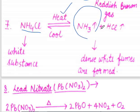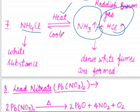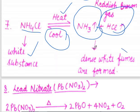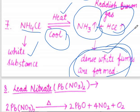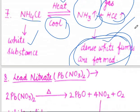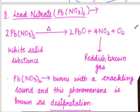Next is ammonium chloride. On heating ammonium chloride, ammonia gas and HCl gas are released. When cooled down, a white color substance is reformed. The observation is that dense white fumes are formed on heating ammonium chloride.